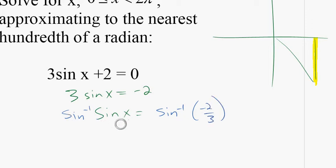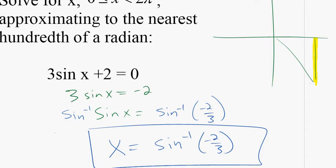Inverse sine of sine of x just goes to x. And so really what we're looking for is the inverse sine of negative 2 thirds. x equals the inverse sine of negative 2 thirds. We want the angle with the sine ratio of negative 2 thirds.